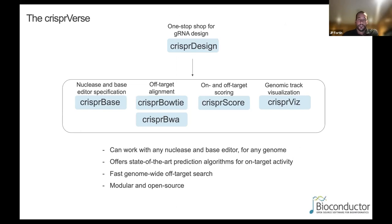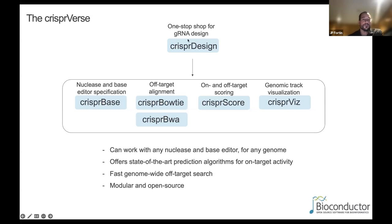After a few years of refactoring our code, we started developing a more consistent ecosystem of R packages that we call the CRISPRverse. The CRISPRverse is a series of R packages all published in Bioconductor, and it's a modular ecosystem where each R package does a very specific task in guide RNA design. For instance, there's CRISPRbowtie and CRISPRbwa, which — as you can guess from the names — do Bowtie and BWA alignment of guide RNA sequences.